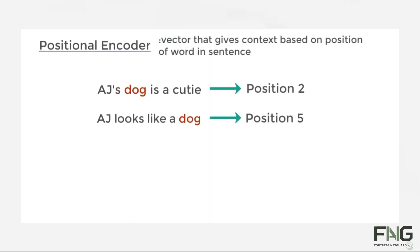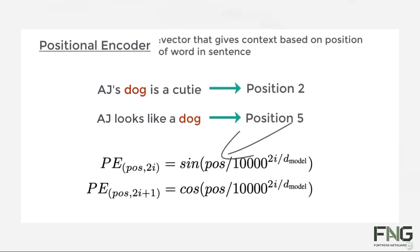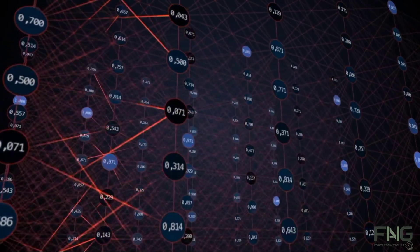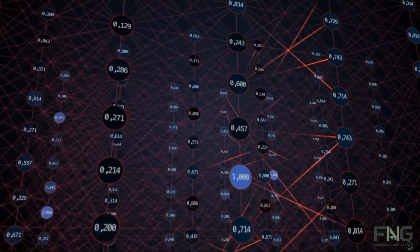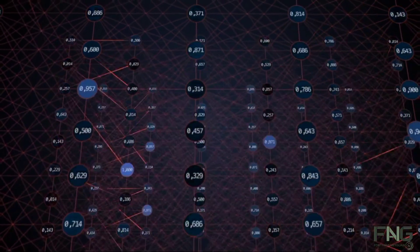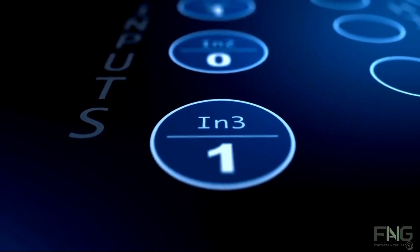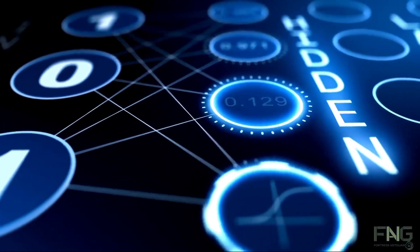Positional encodings involve assigning a numerical value to each word in a sentence based on its position. Rather than processing words sequentially, the network incorporates information about word order directly into the data. As the network is trained on extensive text data, it learns to interpret these positional encodings, thereby understanding the importance of word order. This innovation played a crucial role in making transformers easier to train compared to RNNs.